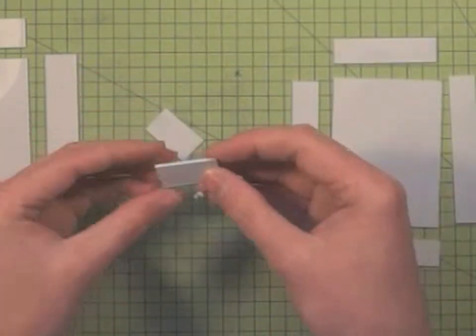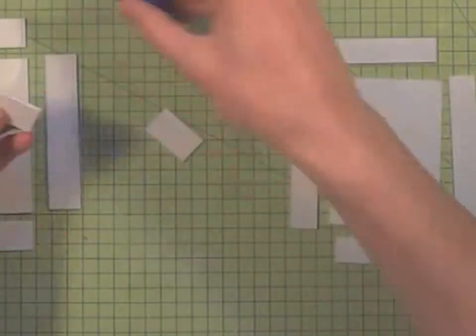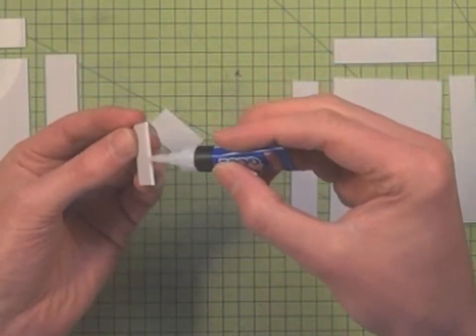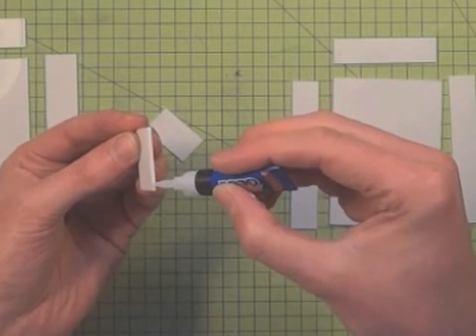And again, if you are gluing things together with super glue, apply a little bit of superglue along the edge, like so.